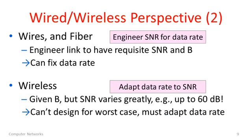So just recapping, for wires and fiber, we engineer the system to give us a certain data rate that we expect and spec. For wireless, we need to adapt to the SNR.